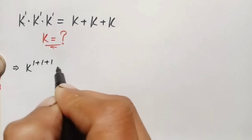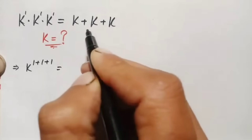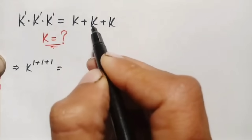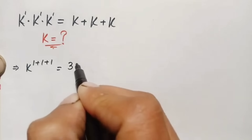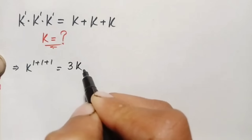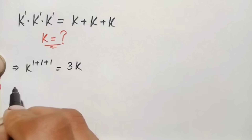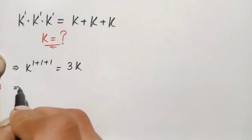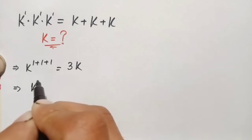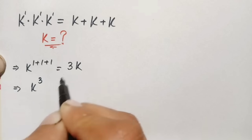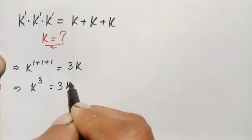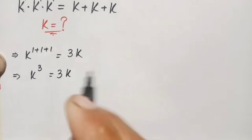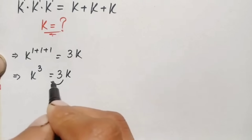So we can write this as k raised to the power of one added three times, which gives us k cubed. On the right hand side, since k has a coefficient of one and is added three times, this becomes 3k.